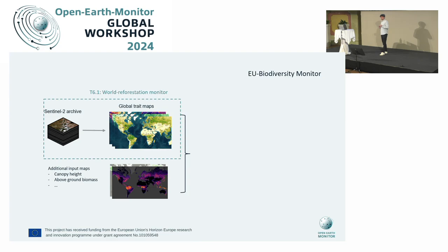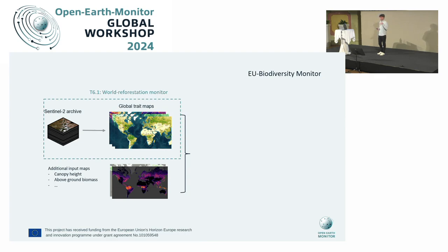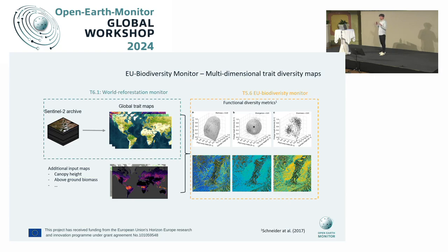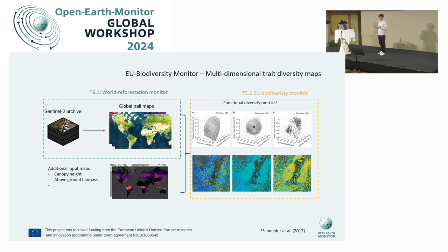This is one part of what we do — these biophysical global trait maps. In a second task for the project, we look at how we can collapse all this information into a more biodiversity-relevant quantity. We take our trait maps, combine them with other biophysical trait maps such as canopy height or above-ground biomass, and estimate a sense of functional diversity. For a given pixel, you look at the neighborhood of pixels in a multidimensional trait space, and apply functional diversity metrics like richness, divergence, and evenness to better describe the ecological meaning of diversity in that area.